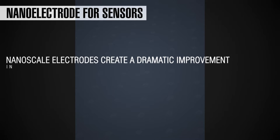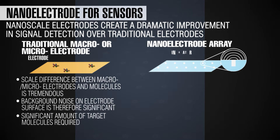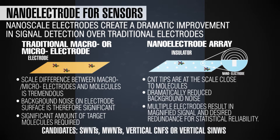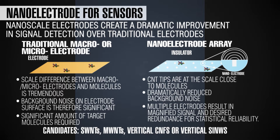We need to justify the need for nano-electrodes. A nano-electrode can provide a dramatic improvement in signal detection over the conventional micro or macro-electrode. With a large electrode there is a substantial size difference between the electrode and the biomolecule you're trying to detect. The background noise is proportional to the electrode surface area, so a large electrode results in a big background noise, and you would need a significant number of molecules to get meaningful signal over the noise.